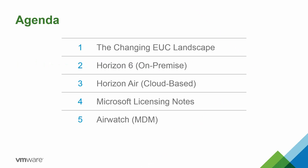Here's a quick agenda of what we'll be covering today. I will start off by talking about today's challenging EUC landscape, which is obviously changing. Then I will cover VMware's Horizon 6 package, our on-premise solution, followed by our cloud-based solution, Horizon Air. We'll briefly discuss some Microsoft licensing in relation to virtual desktops, and finally touch upon AirWatch, since it relates to mobile devices, which is a huge part of end-user computing nowadays.